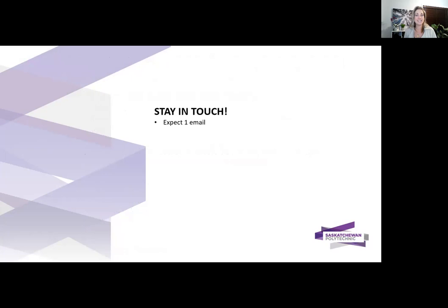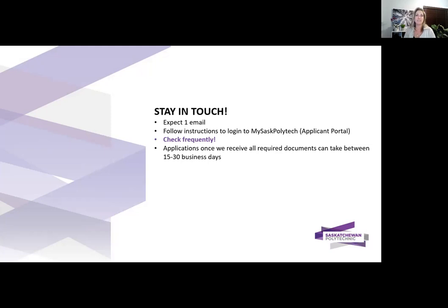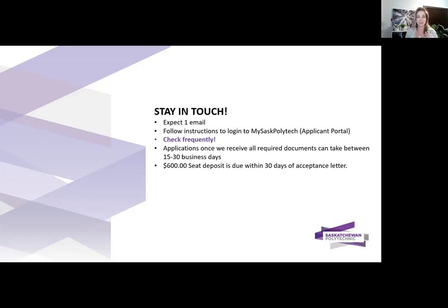Once you have applied, watch for an email from SaskPolytech with login credentials to your My SaskPolytech portal. Check that portal frequently — if we have received all required documents, you will find out within about 15 to 30 business days if you have been accepted. If accepted, you will need to put down a $600 seat deposit due within 30 days of your acceptance letter. To recap: once you apply, you have 60 days to submit all required documents, and if offered a seat, 30 days to provide the $600 deposit.